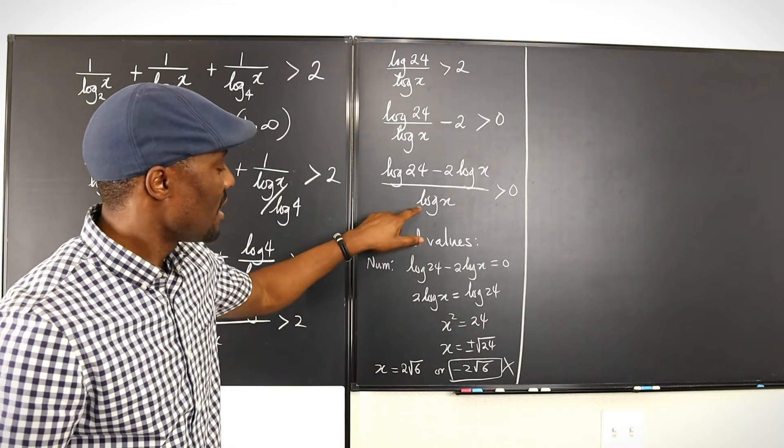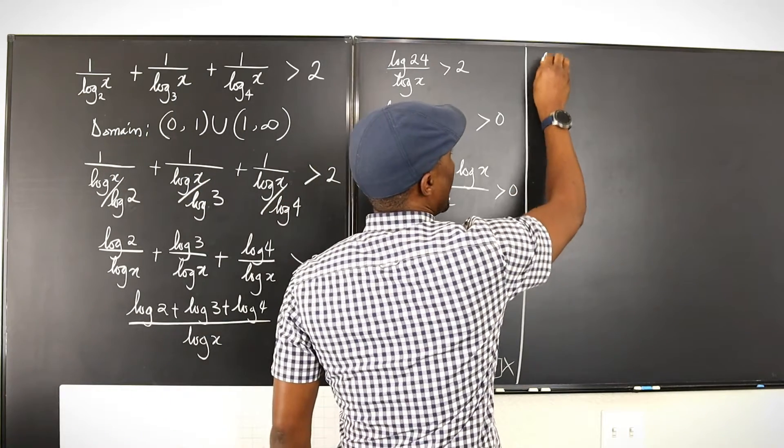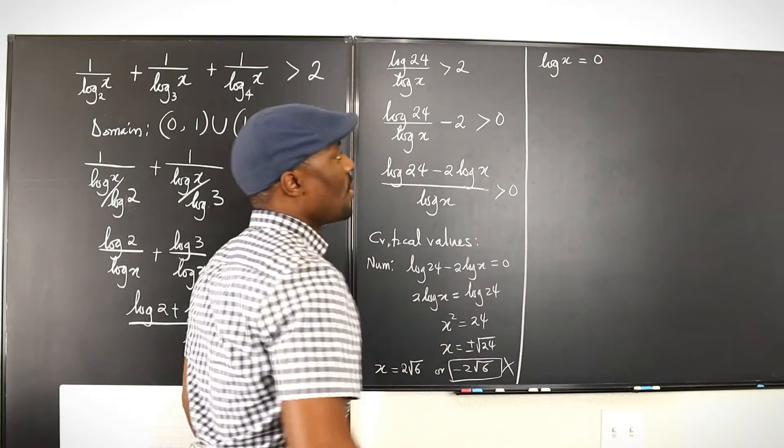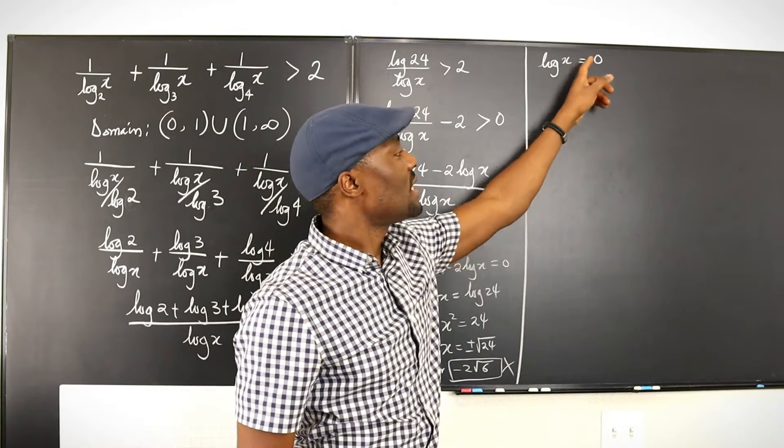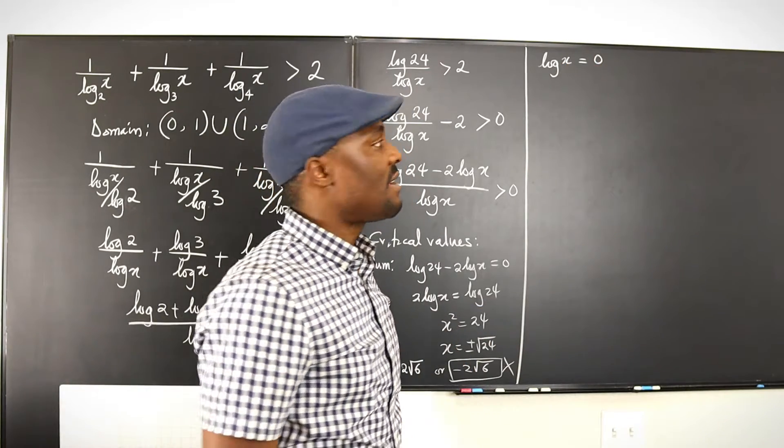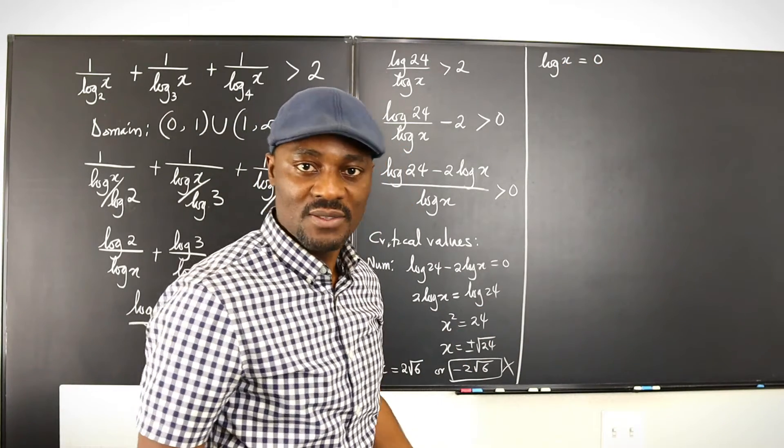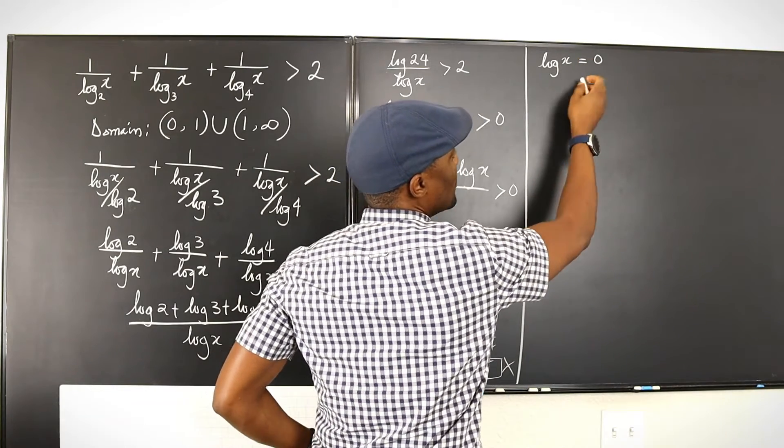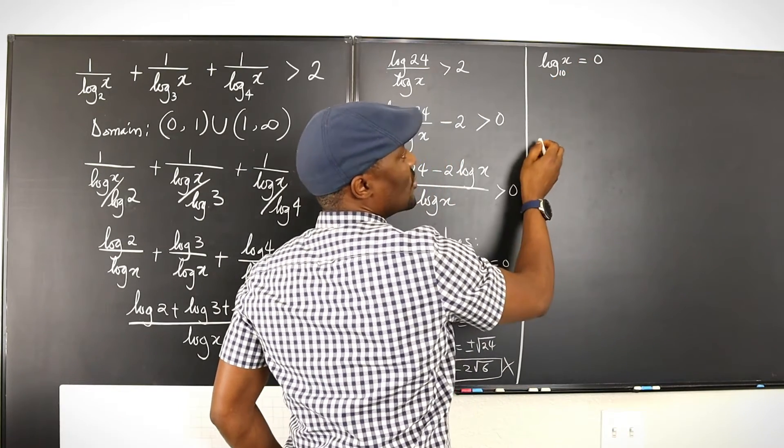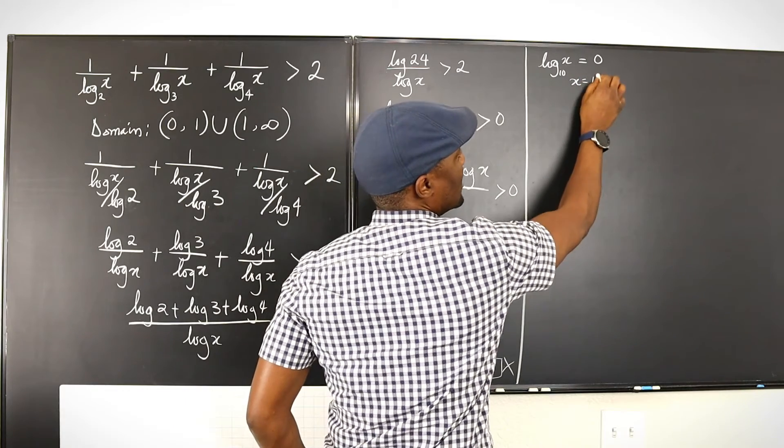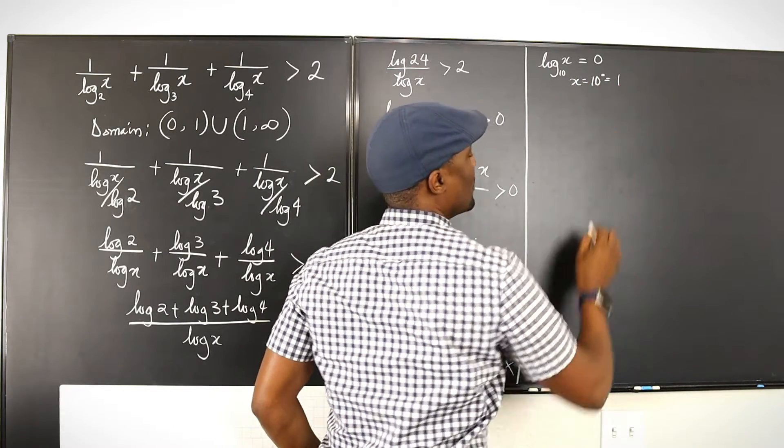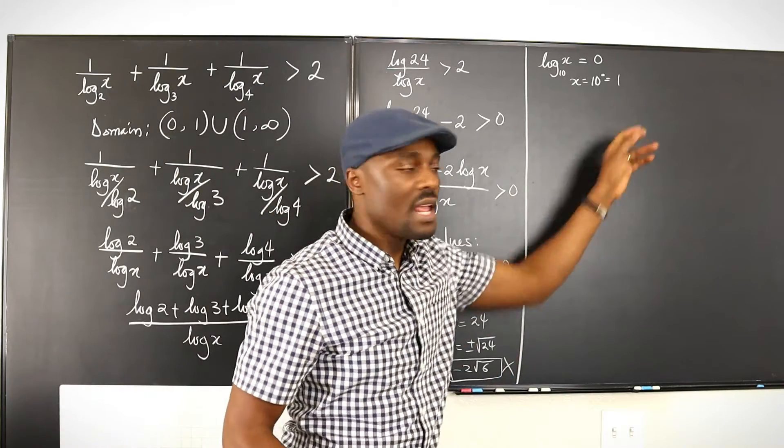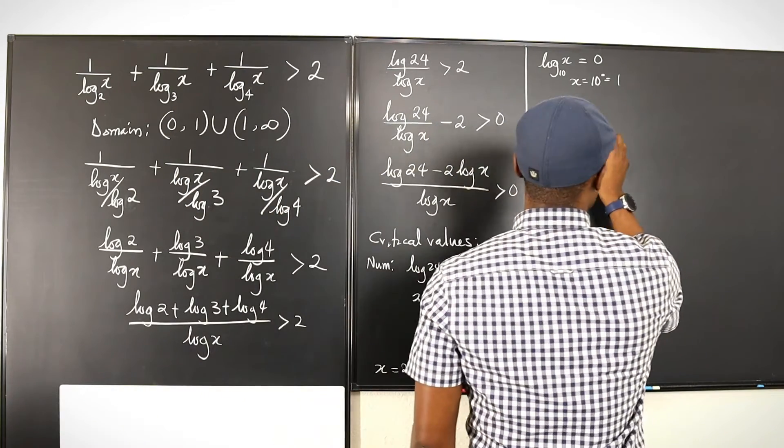Now let's say the other critical value here. That would be when log x is equal to zero. Well, the only time log x will be equal to zero is if x is equal to 1. Remember that? So log x equals zero means x equals 1. Remember, this is to base 10. So you can as well say x will be equal to 10 to the zero, which is equal to 1. So now we have the second critical value, which is x equals 1. Now let us see what's going on.